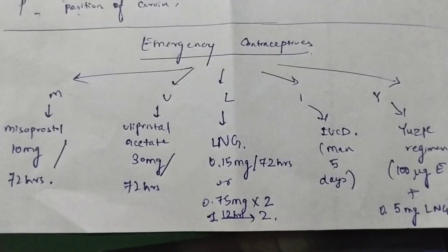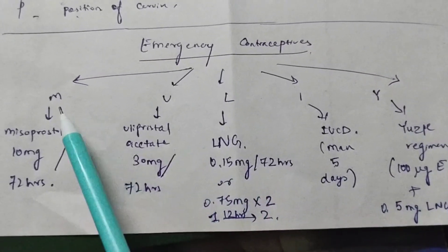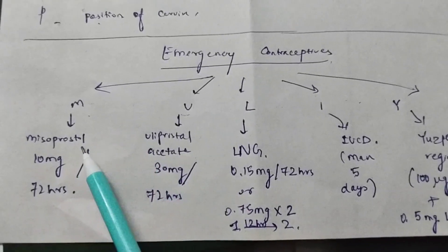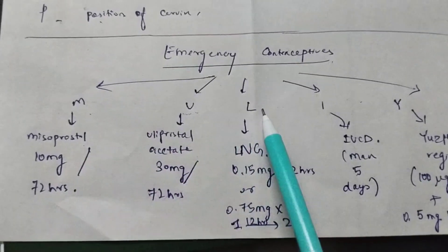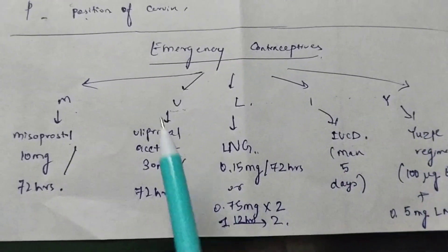We will study about emergency contraceptives which you can remember with the mnemonic MULI. M stands for mifepristone, U stands for ulipristone acetate, L stands for levonorgestrel, I stands for IUCD, and Y stands for the Yuzpe regimen.